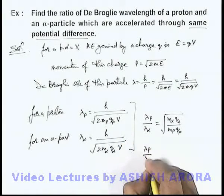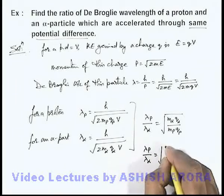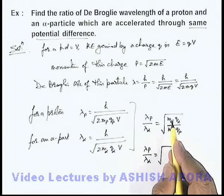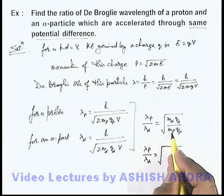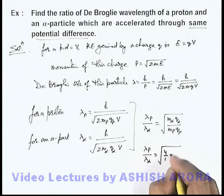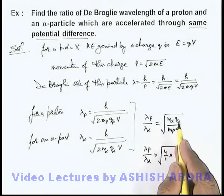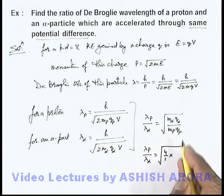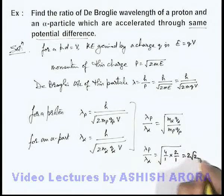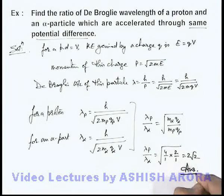So lambda p by lambda alpha, we can write as root of—we can write that the mass of alpha particle is 4 times that of the proton, so m alpha by m p we can write as 4 by 1, multiplied by charge of alpha is twice that of the proton, it can be written as 2 by 1. So the result we are getting is 2 root 2. That'll be the answer to this problem.